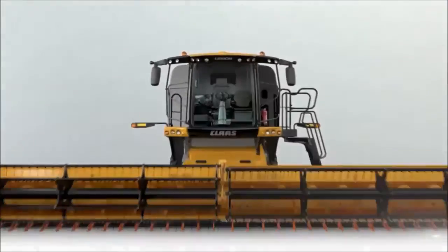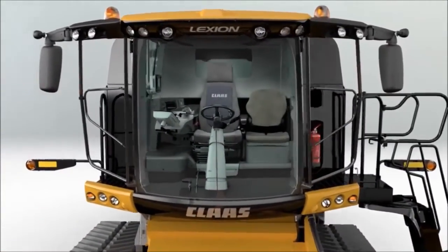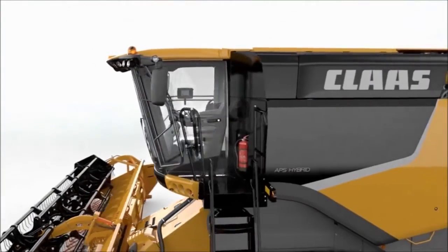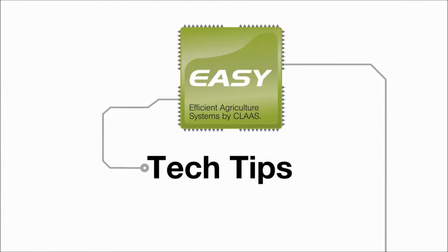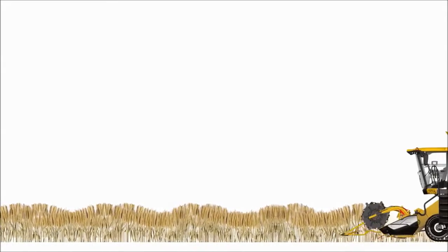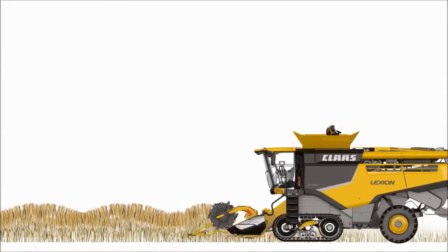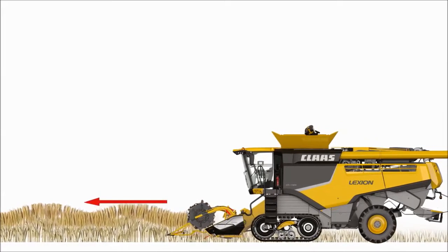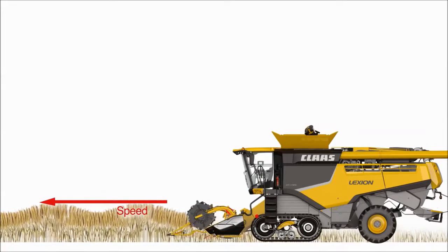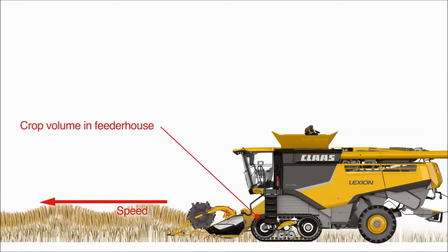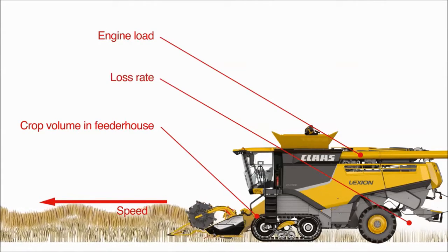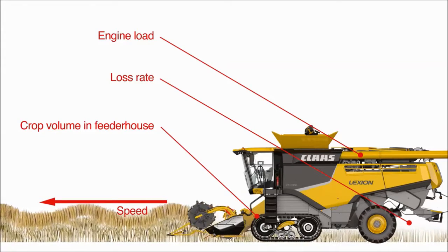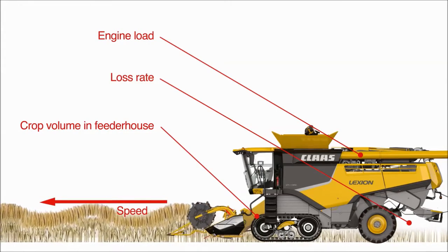Welcome to the overview guide for your Kloss CruisePilot. We'll show you how to get the most out of your CruisePilot by optimizing its functionality and settings. The Kloss CruisePilot automatically controls and adjusts your harvesting speed to maintain optimal harvesting settings. The CruisePilot monitors things like ground speed, crop volume in the feeder house, engine load and grain losses. This allows your combine to run consistently while giving you the best harvest results possible.